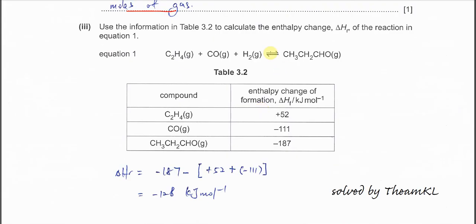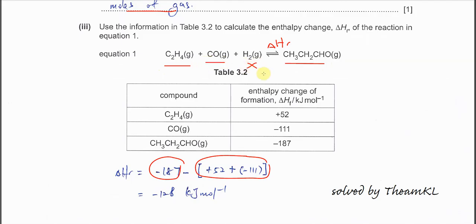Part 3: calculate ΔHr using given ΔHf values. Use the formula: ΔHr = ΔHf(products) − ΔHf(reactants). The product is propanal; the reactants are C2H4 and CO. H2 has ΔHf = 0, so it is not included. Substituting values: −187 − (52 + (−111)) = −187 − (−59) = −128 kJ/mol.